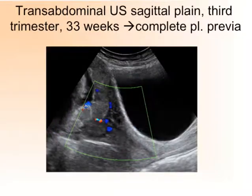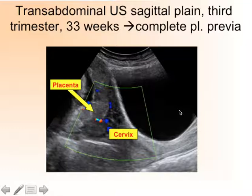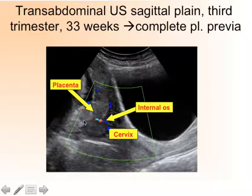Let's repeat the ultrasound scan at 33 weeks — the same sagittal plane section in the midline. On the right-hand side you can see the full bladder. The grey area is the placenta, and this is the internal os. It's clear that the placenta is completely covering the internal os. Hence, now, per definition, we are dealing with placenta previa.